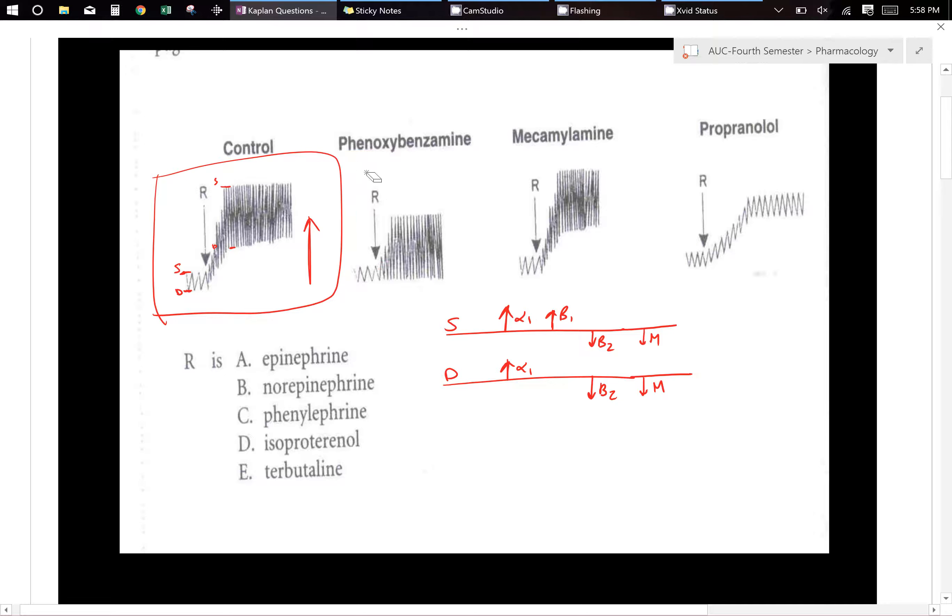So let's talk about phenoxybenzamine. Phenoxybenzamine is an alpha blocker. It's not specific. Alpha 1, alpha 2, they will block both.